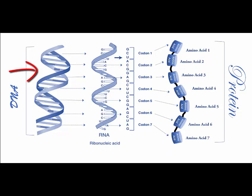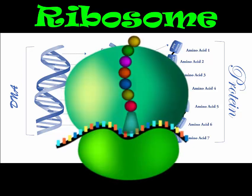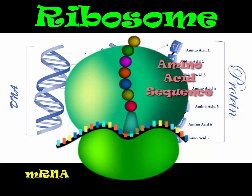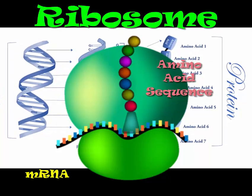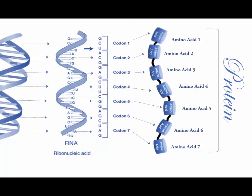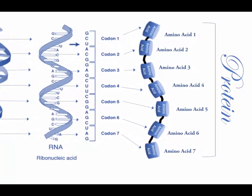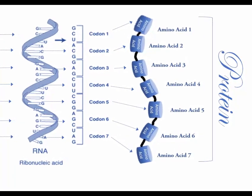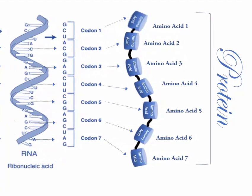To summarize: we start with DNA, and using DNA as a template we make mRNA, or messenger RNA. The messenger RNA leaves the nucleus and goes to the cytoplasm, where it docks onto a ribosome. Transfer RNA reads the code on the mRNA as a triplet code called a codon, and adds on the appropriate amino acid. As amino acids are added on, the protein is formed.